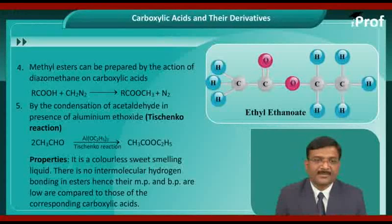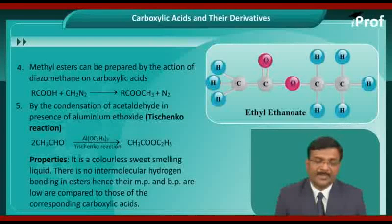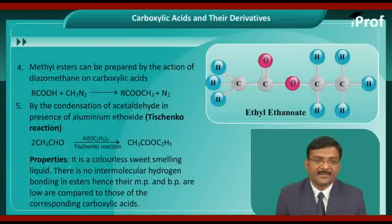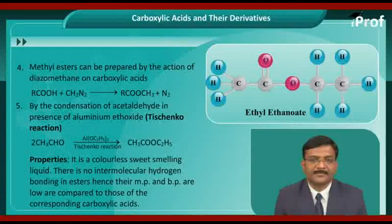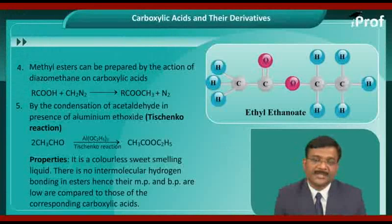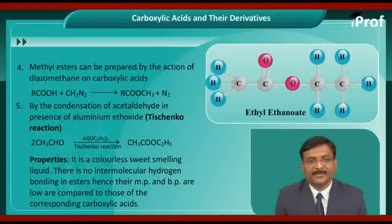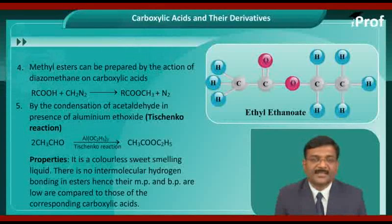The next reaction to prepare an ester is by the condensation of acetaldehyde in the presence of aluminium ethoxide. This is a very important name reaction, known as the Schilko reaction. The reaction is CS3CHO heated in the presence of aluminium ethoxide, giving CS3COOC2H5.